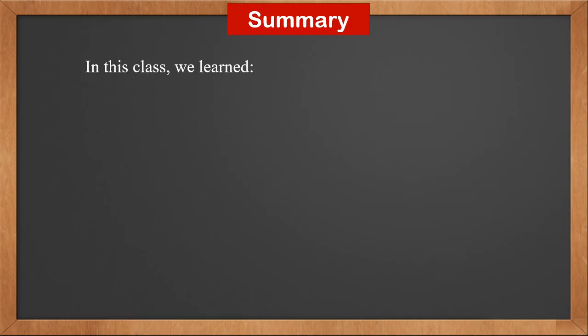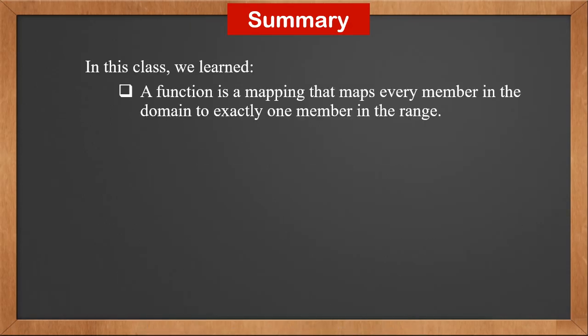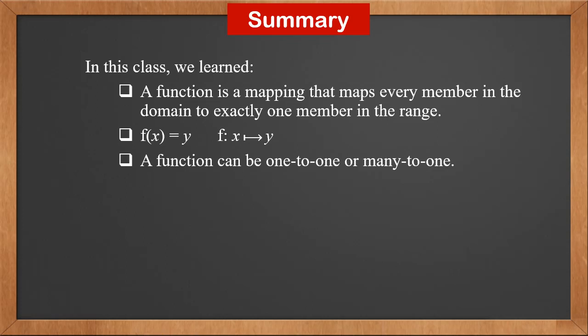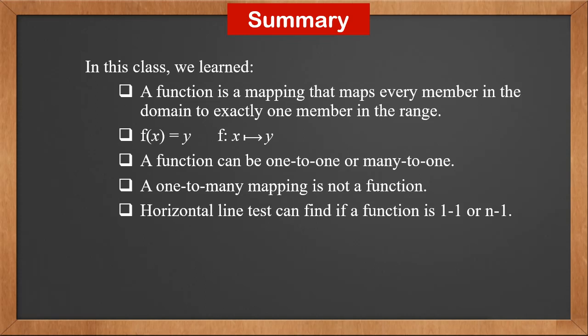In this class, we learned: A function is a mapping that maps every member in the domain to exactly 1 member in the range. It can be written as f(x) equals y, or f colon x right arrow y. A function can be 1 to 1 or many to 1. A 1 to many mapping is not a function. Horizontal line test can find if a function is 1 to 1 or many to 1. Vertical line test can find if a mapping is 1 to many.